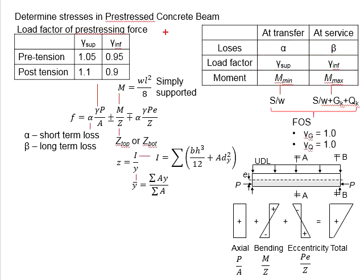Also, for the geometrical property of the section, Z-top is used to determine the stress on top of the beam, while Z-bottom is used to determine the stress in the bottom of the beam.